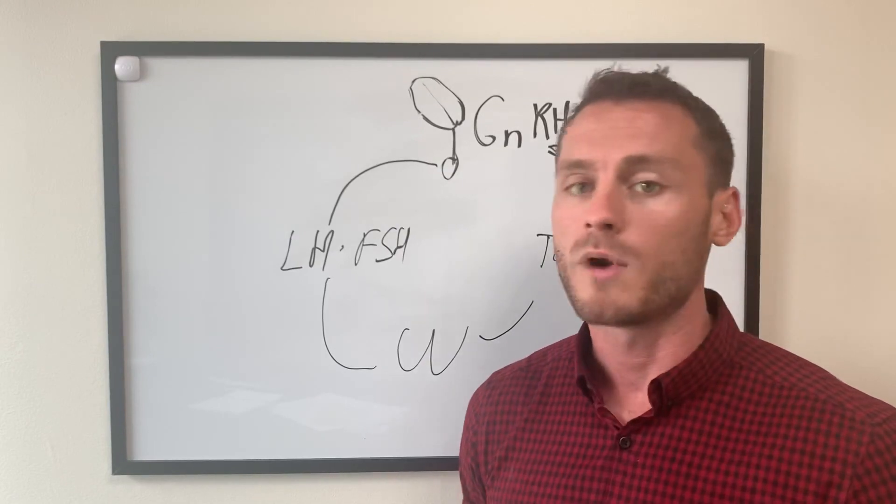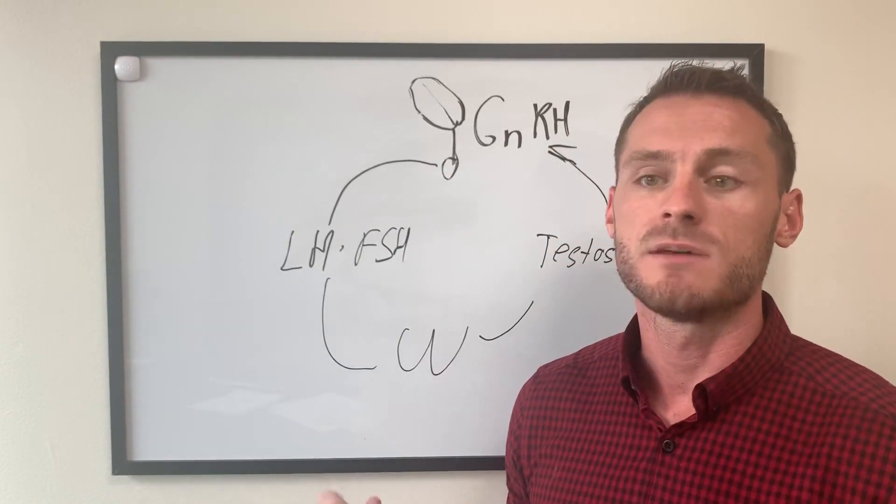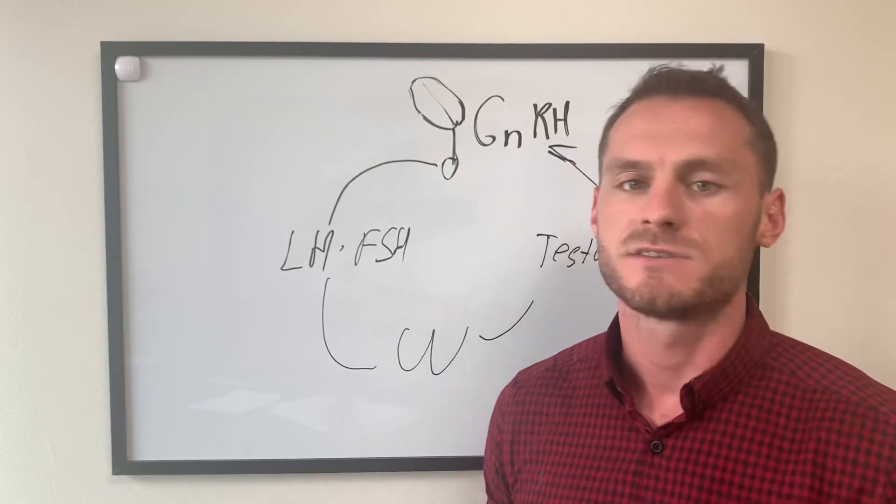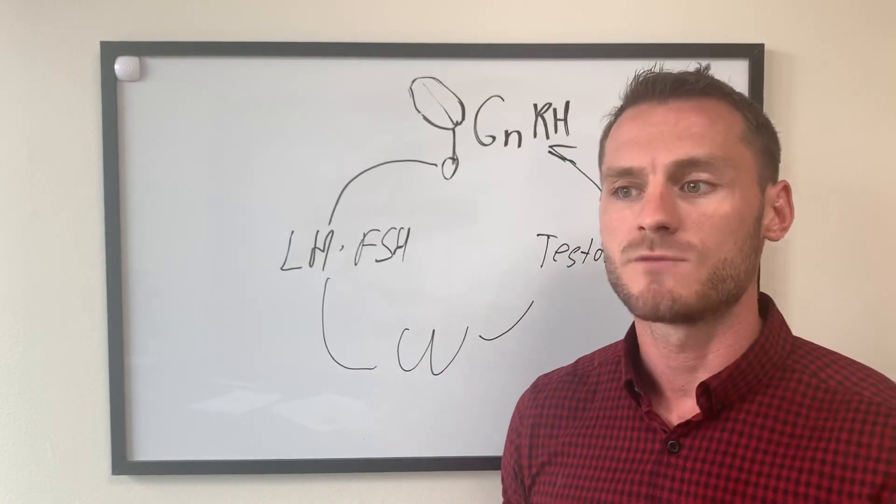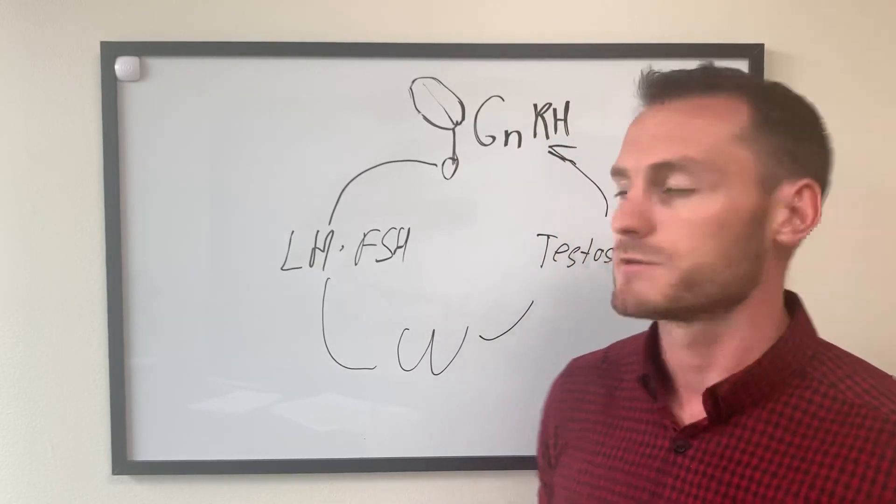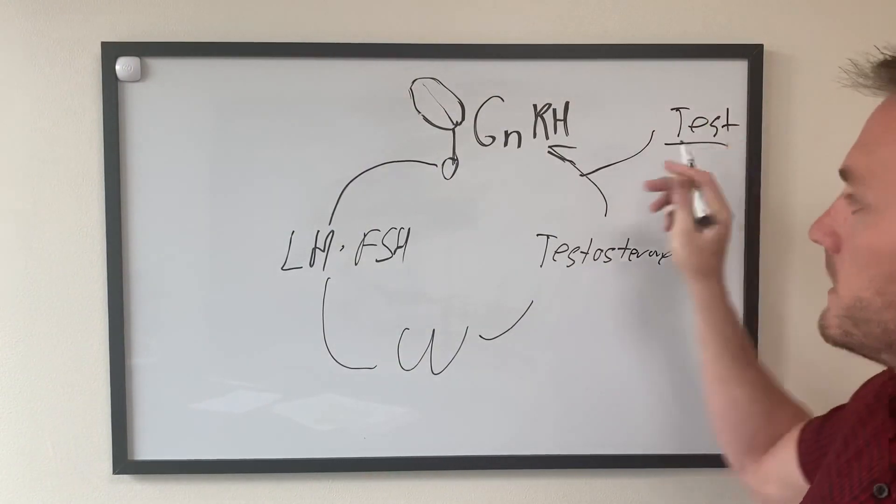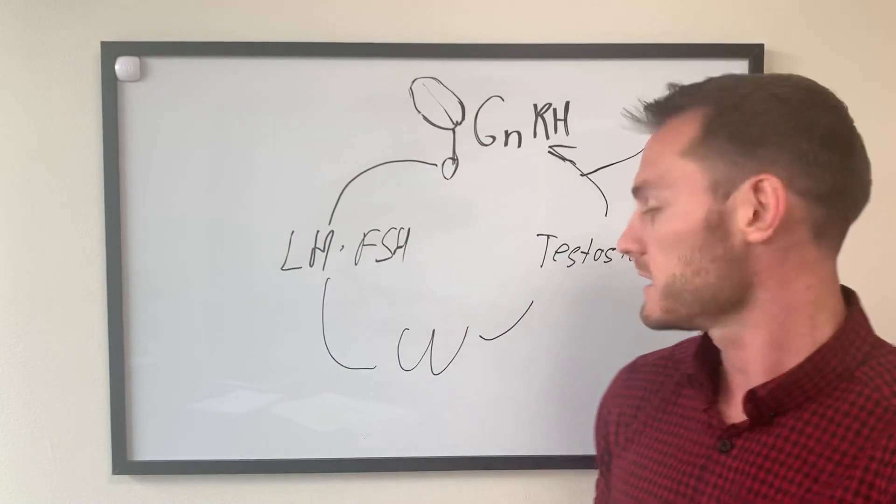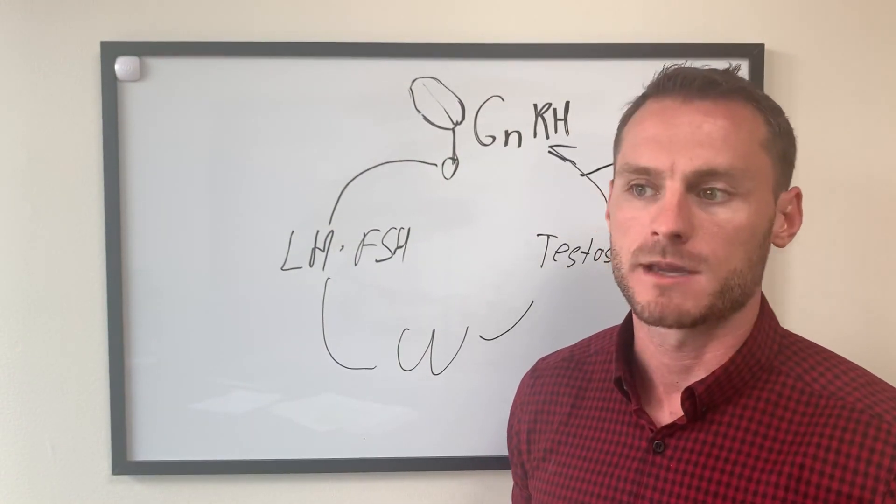Now in the case of what's called primary hypogonadism, it's when the testicles aren't giving the body enough testosterone. Now this is a little bit of a debated area because as men age their testosterone naturally declines. So in the case of hormonal optimization, what we do is we give the body a form of bioidentical testosterone.